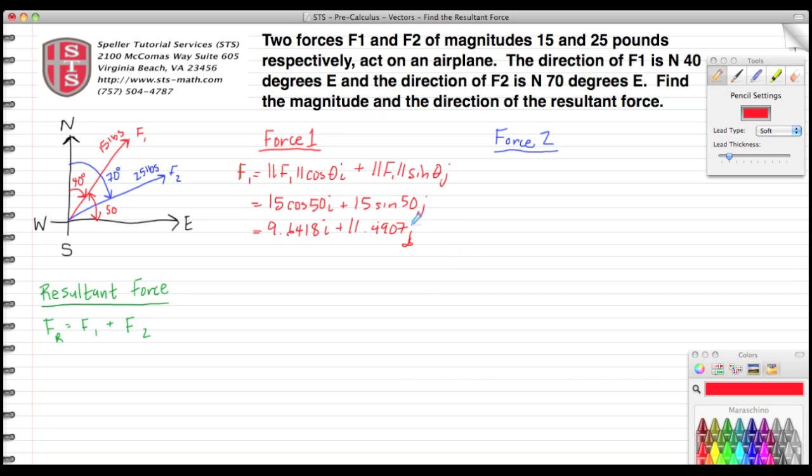We have our i and j components for force 1. Now let's go to force 2. For force 2, we know that it had a bearing of 70 degrees north, north 70 degrees east. So we know this angle here, theta, has to be 20 degrees because 70 plus 20 is 90. So here I'm going to skip a little bit and go straight to substituting in the values. We know that the magnitude of F2 is 25.